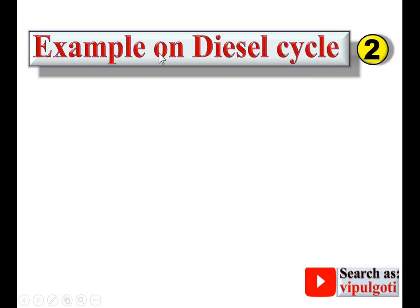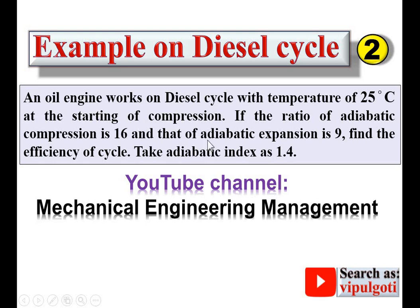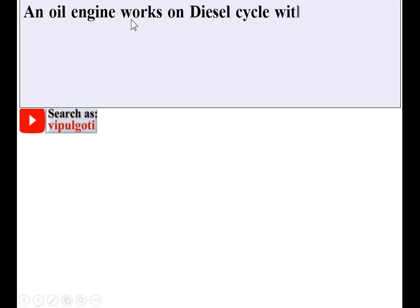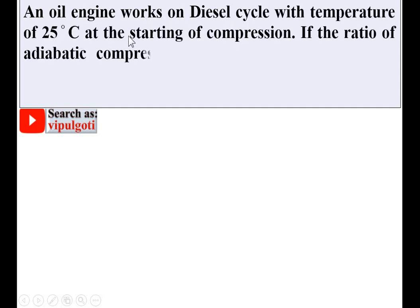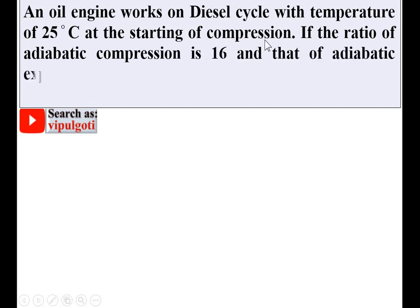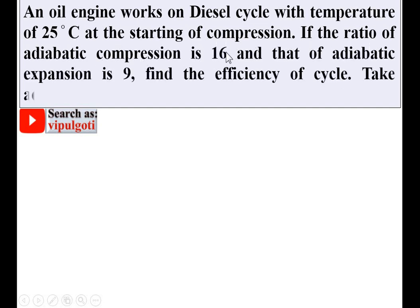Today we are going to discuss an example on the diesel cycle. Welcome to my YouTube channel Mechanical Engineering Management. The problem: an oil engine works on a diesel cycle with a temperature of 25 degrees Celsius at the starting of compression. The ratio of adiabatic compression is 16 and that of adiabatic expansion is 9. Find the efficiency of the cycle. Take adiabatic index as 1.4.